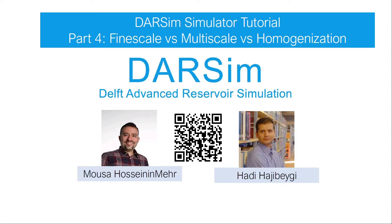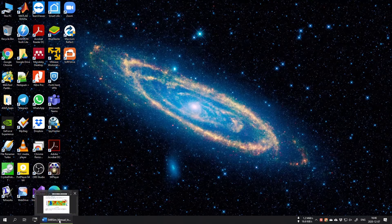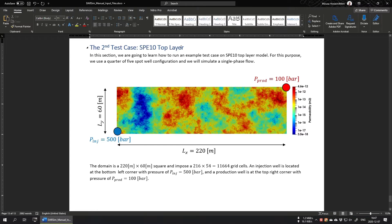For this we will use the SPE10 top layer model as our 2D test case. The SPE10 top layer test case will be the same as before. The only difference is that we use a single phase flow model this time and we discretize the system into 216 by 54, so in total about 11,600 grid cells. We choose this discretization because we will use multi-scale or homogenization with coarse scale grid cells, and for those we need grid numbers in X and Y that are divisible by a smaller number such as 9.